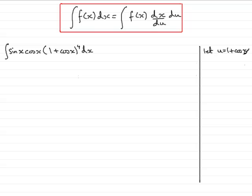What we need to do is differentiate this with respect to x, so therefore we have du/dx is equal to, well the differential of 1 is 0, and the differential of cos x is negative sine x.